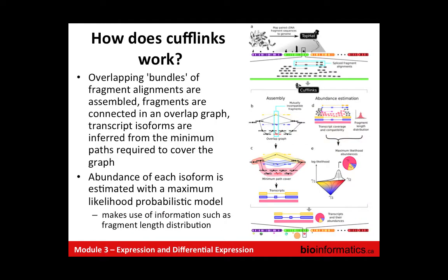So how does Cufflinks work? This is probably the topic for a whole presentation — there's been more than one paper published on it, and it's quite sophisticated software. The general concept is that you assemble bundles of fragment alignments — fragments that overlap are assembled together. They're then connected in a graph, and Cufflinks tries to draw a path through transcripts that have connections by overlapping fragments. From that, you can infer transcript isoforms using the concept of the minimum path required to cover the graph.